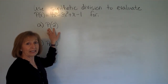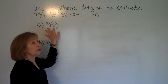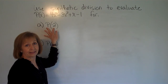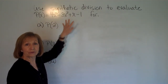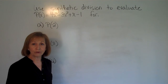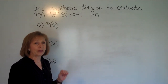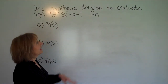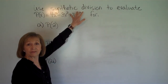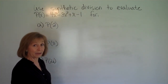Now, if you want to double check your work, you could take out all the X's in P of X, replace them with negative 2, follow your order of operations doing exponents first, then the multiplication, combine your like terms, and get your polynomial value. But because they want us to use synthetic division, we're going to do it with the synthetic division method that they requested.